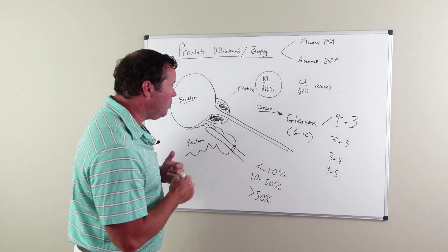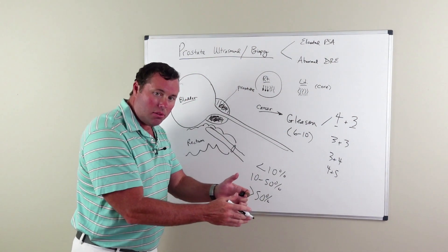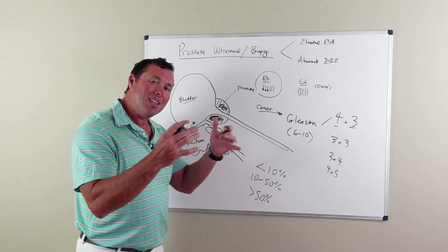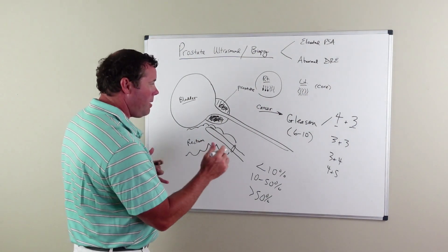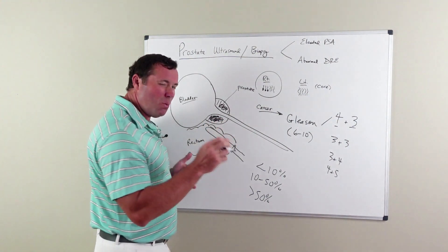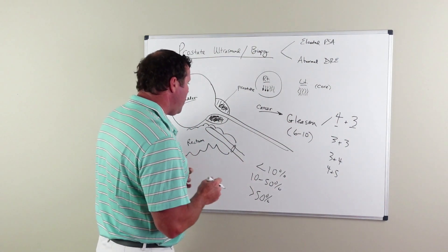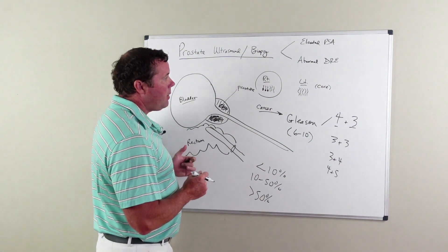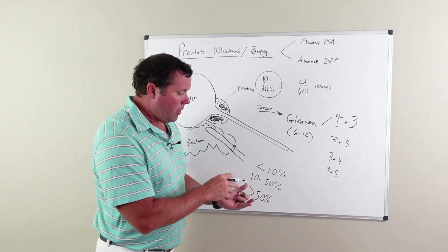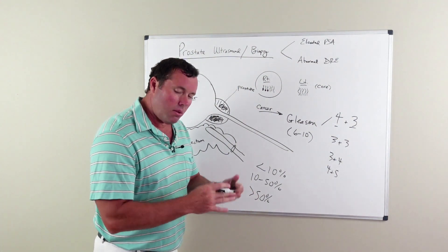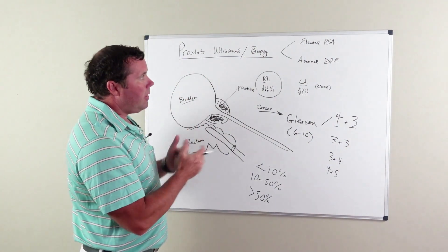The third thing the biopsy will show is: is it a right-sided cancer, a left-sided cancer, or is the disease bilateral? Prostate cancer is often multifocal, meaning when it's in one part of the prostate, it can often be found in other parts of the prostate as well. So it's important to know not only the Gleason score and volume of cancer, but also is it on both sides or one side of the prostate.